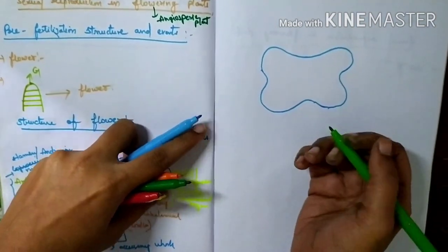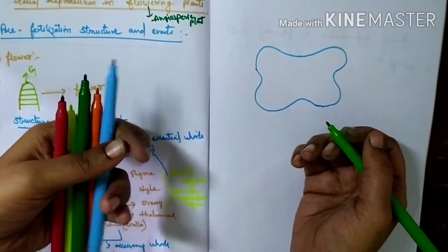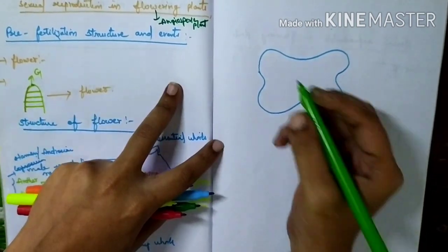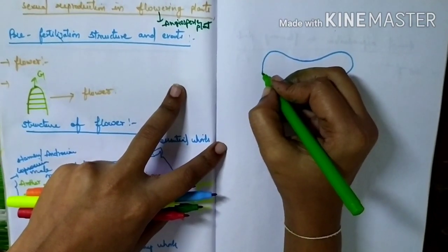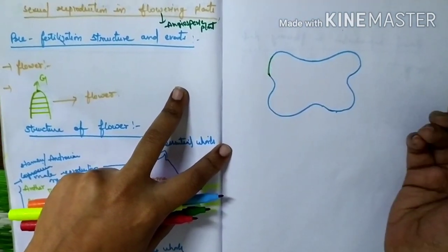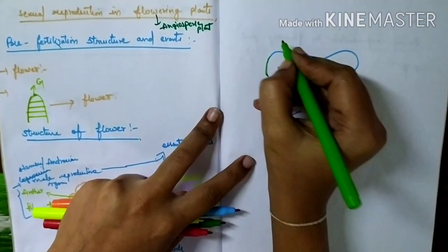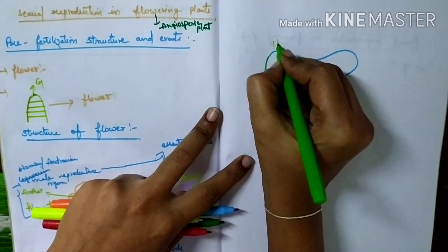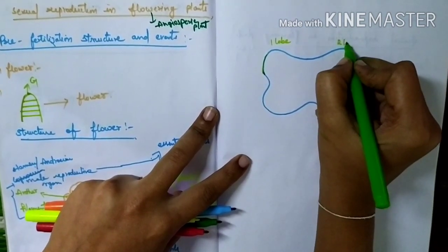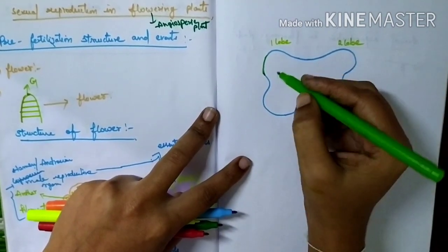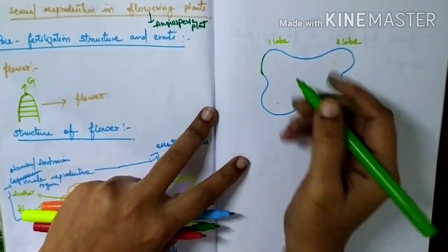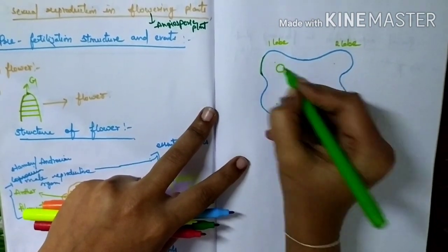If you take a transverse section of the anther, you will see bilobed structures — the anther has two lobes. Each lobe consists of two thecae, so the anther has four thecae in total.